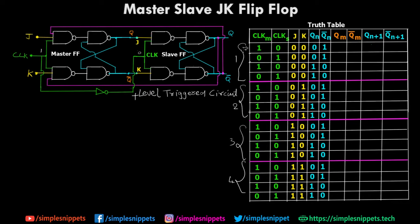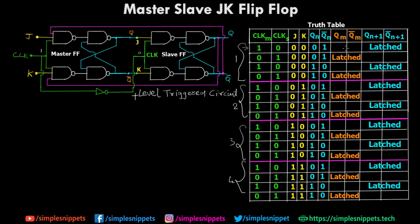So for the first case, if clock of slave is 0, Q(n+1) and Q bar(n+1) are going to be in the latch state. Similarly, whenever clock of master is 0, the master is going to be in the latch state. Without even thinking, we can directly fill some blanks with latch state — whenever the clock of the respective flip-flop is 0, the output is going to be in the latch state, meaning it retains the previous state. Latch state is also known as previous state or memory state.